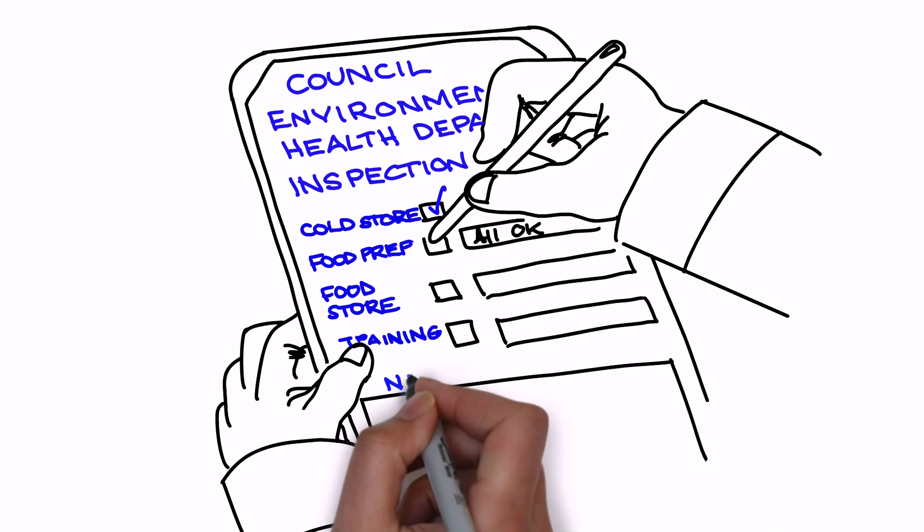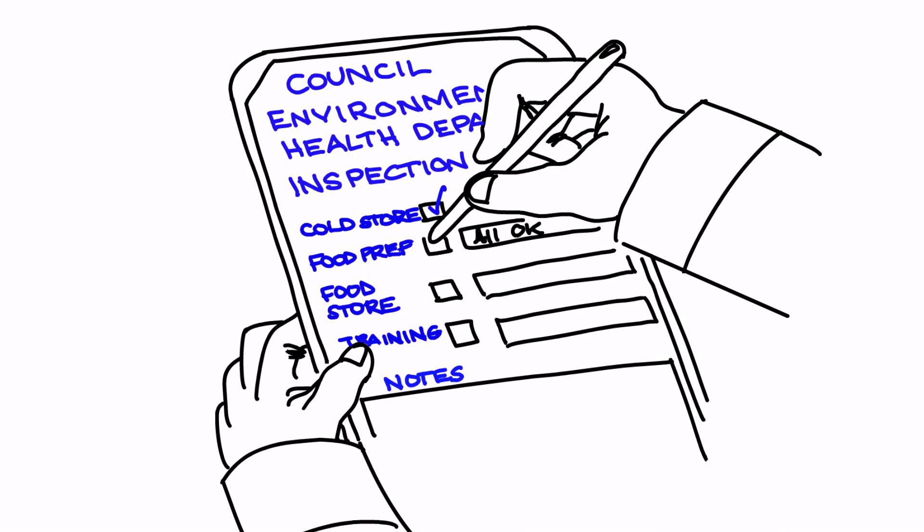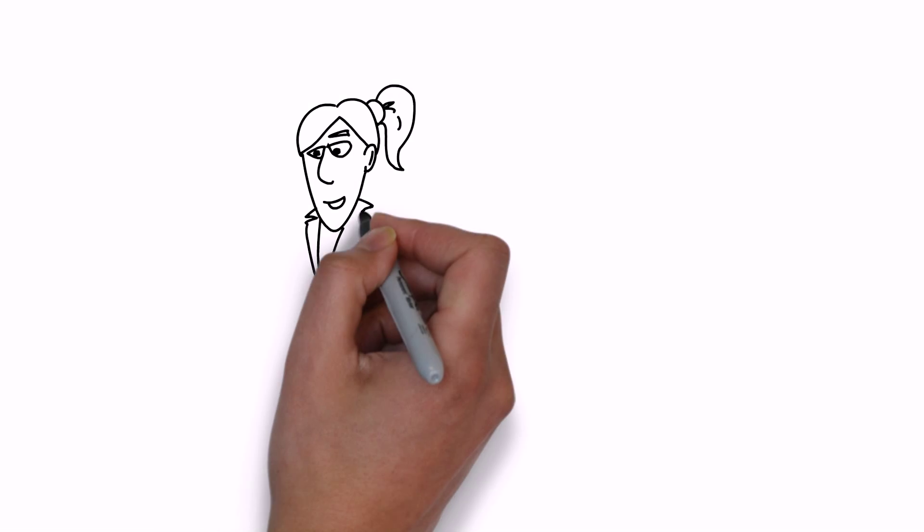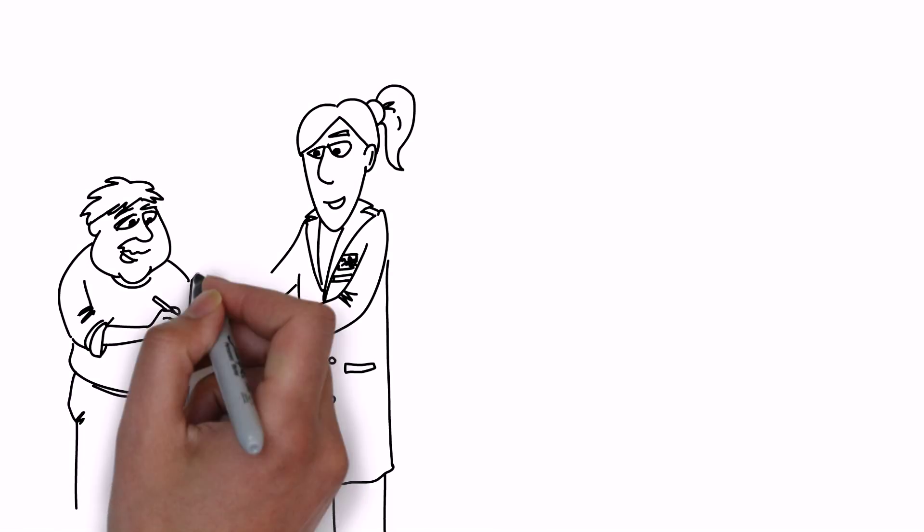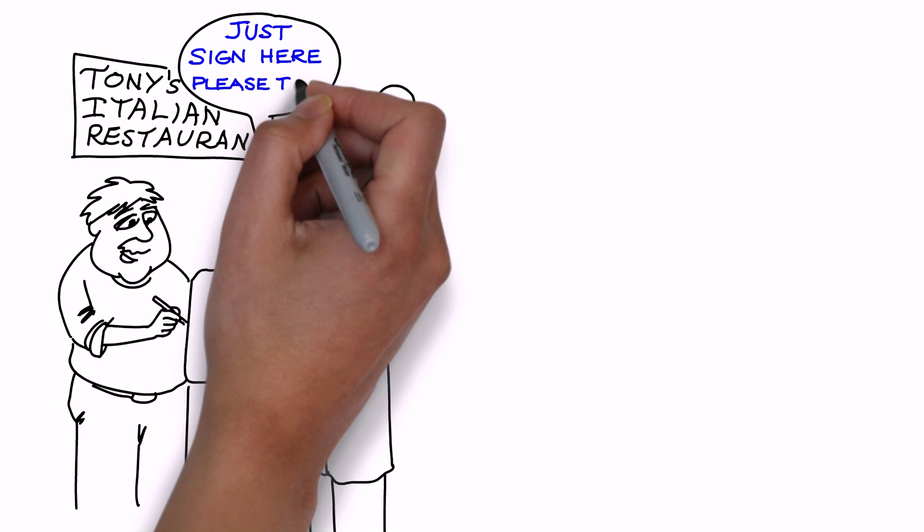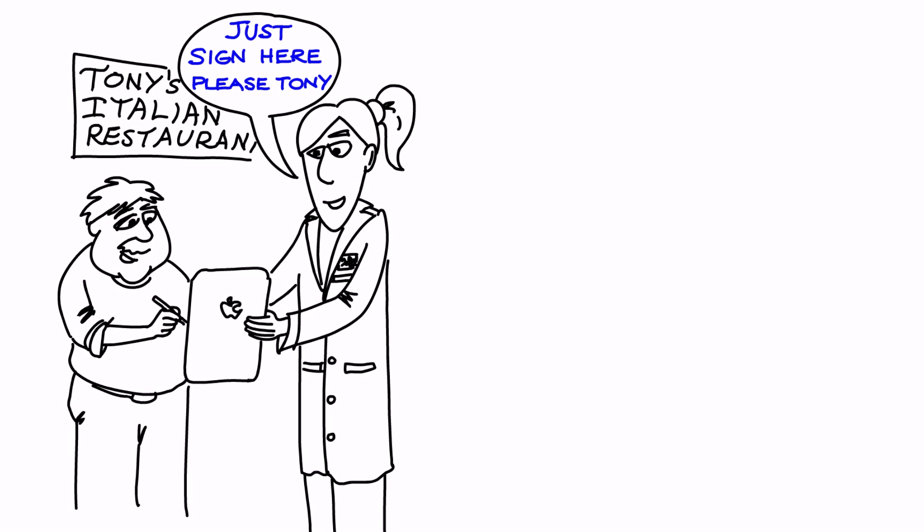Janet can now carry out her inspections and complete all her admin tasks on the device. A customer signs the forms digitally on the device, and Janet then submits her results and sends a report to the customer as a PDF file attached to an email.